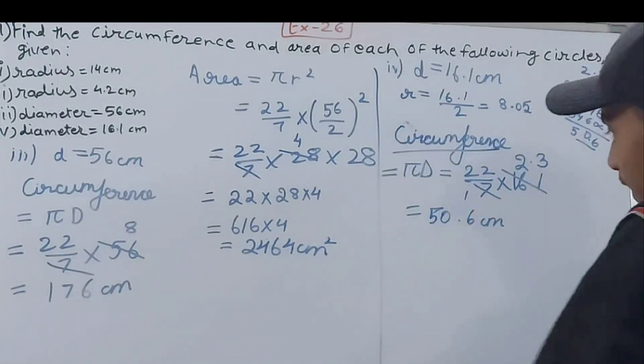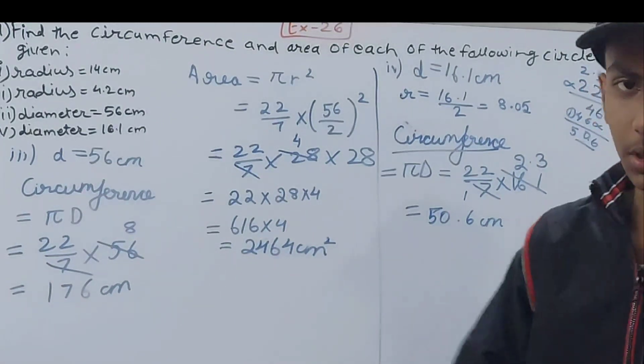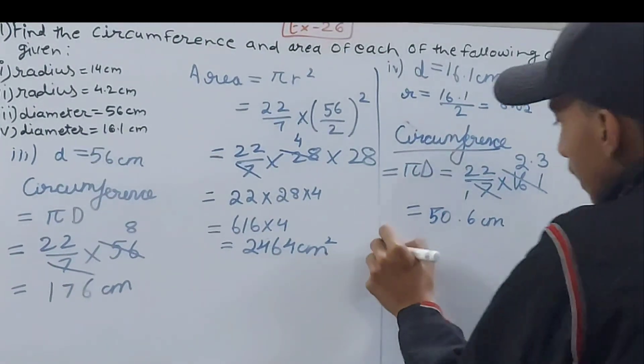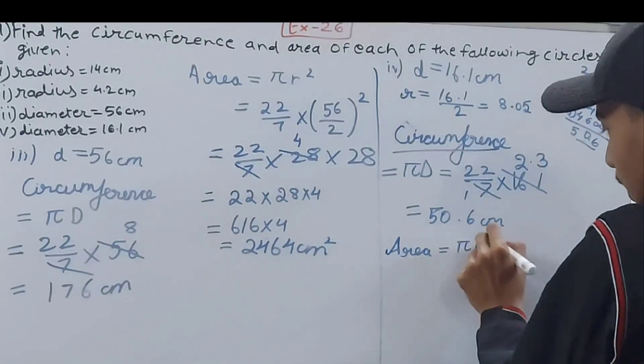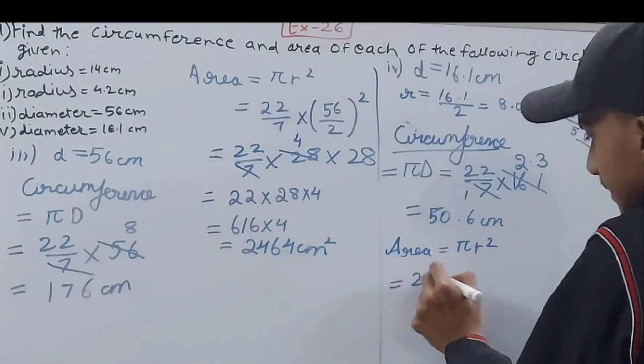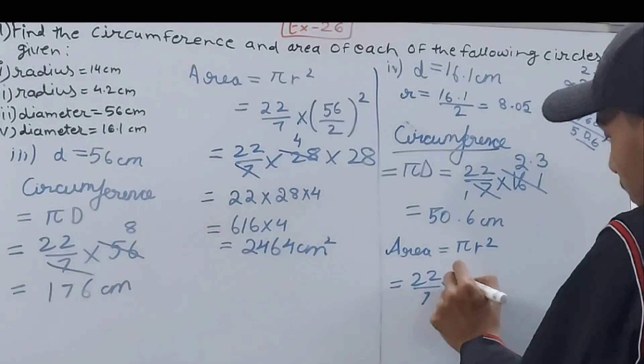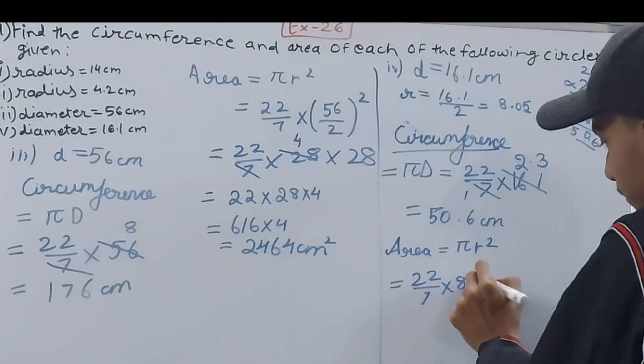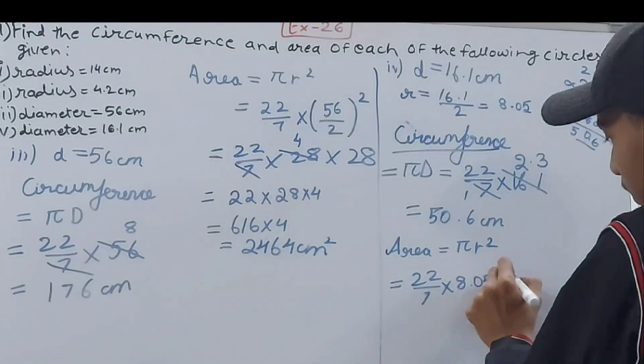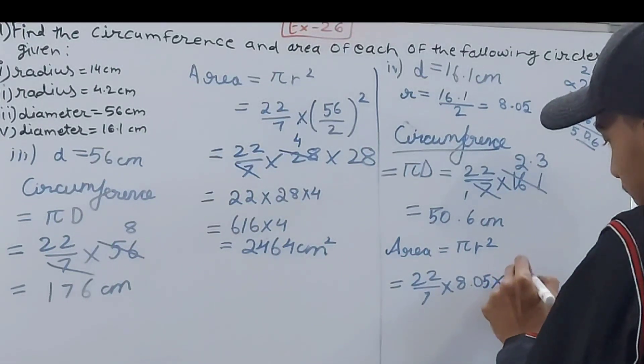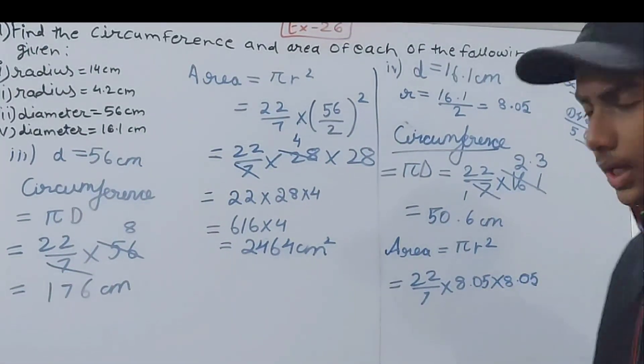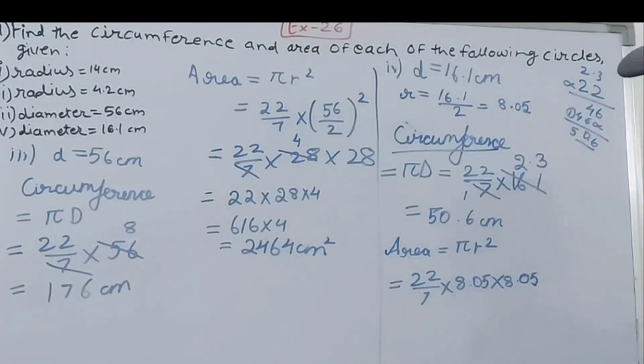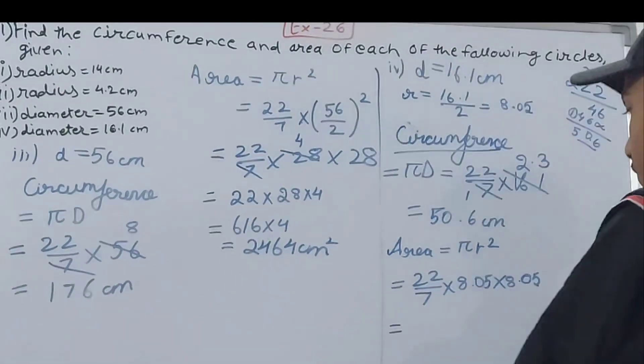Now comes the area and area is very simple, that's πr². So 22/7 × radius is 8.05 × 8.05. Solve this and what do you get after solving this? This is going to be 203.66 square centimeters and that's the area.